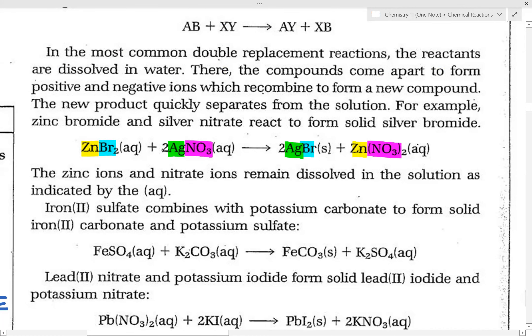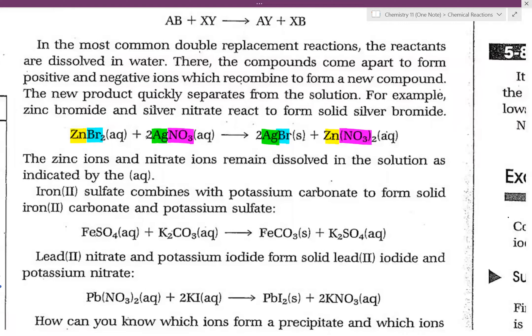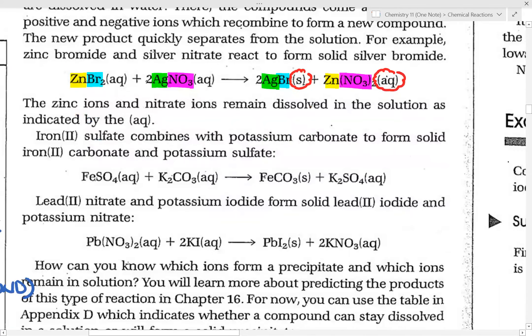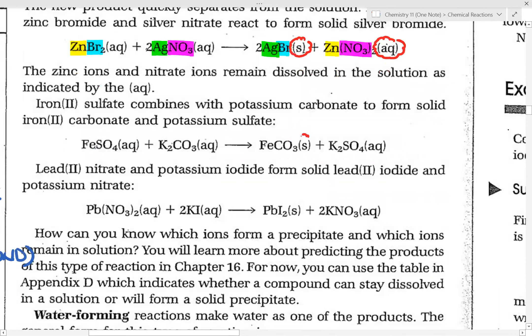Now, the key thing I want you to notice is this. Notice the phase symbols. We have an S and we have an AQ. Now, further along, you will notice that in this case, in another double replacement reaction, FeCO3 has the phase symbol S. K2SO4 has a phase symbol AQ. PbI2 has the S and KNO3 has the AQ. Now, how do we know which one will get the phase symbol of S and which one is the phase symbol of AQ?